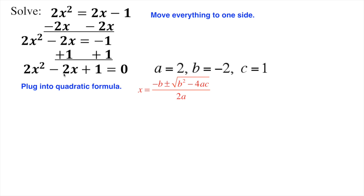b is—we call this a linear term, this is the one with just the variable, the exponent on this is just 1. So this is a negative 2, that's where my b negative 2 came from.